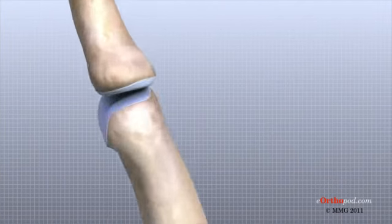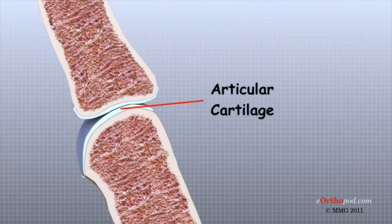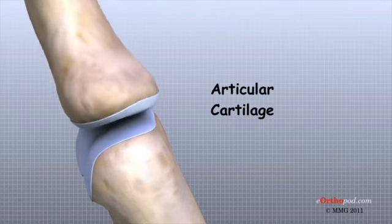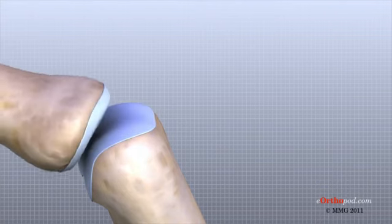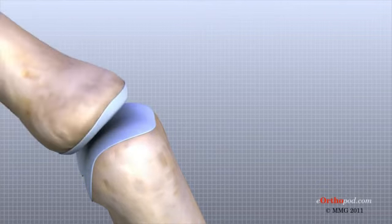The joints of the hand, fingers, and thumb are covered on the ends with articular cartilage. This white shiny material has a rubbery consistency. The function of articular cartilage is to absorb shock and provide an extremely smooth surface to facilitate motion. There is articular cartilage essentially everywhere that two bony surfaces move against one another, or articulate.